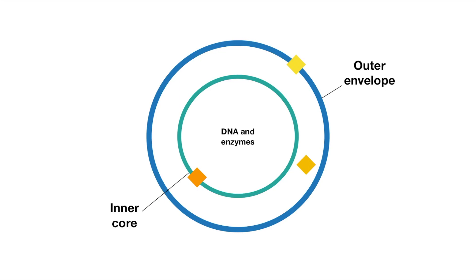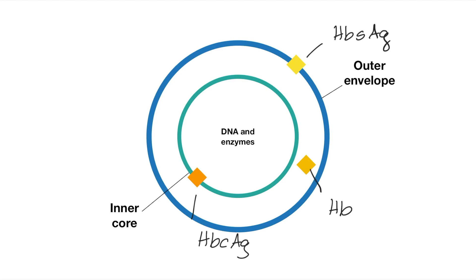The hepatitis B virus consists of an outer envelope as well as an inner core which houses the DNA and the enzymes used for replication. The outer envelope consists of a surface antigen, which you can remember as S for surface, and the inner core contains the core antigen, which you can remember as C for core. In the region between the outer envelope and the inner core, we have an antigen called the hepatitis E antigen.